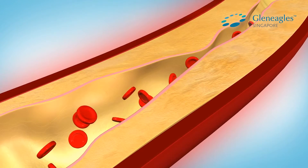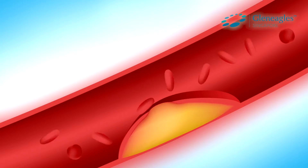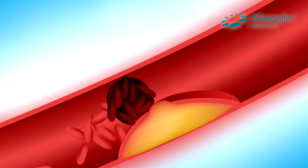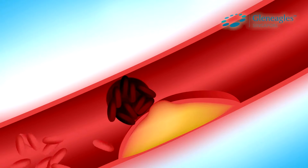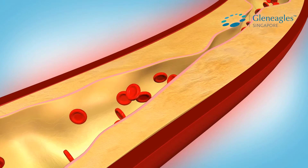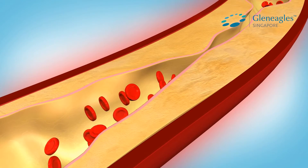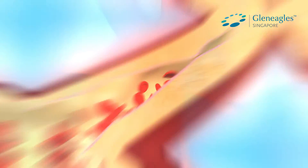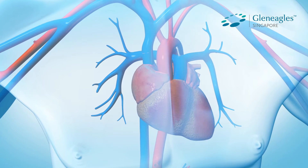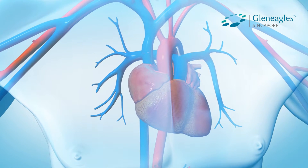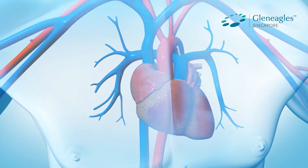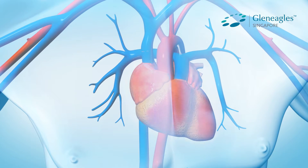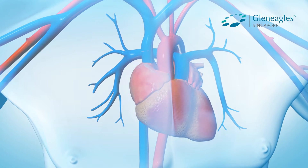Over time, this may damage or weaken the heart. In some cases, the plaque may rupture and the body tries to fix the tear by forming a blood clot around the plaque. This causes the artery to narrow even further. Occasionally, the blood clot formed may completely block blood flow to the heart, causing acute coronary syndromes, which may then lead to a heart attack.